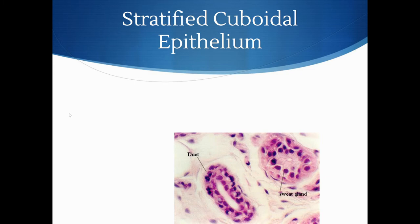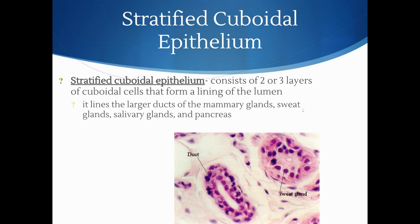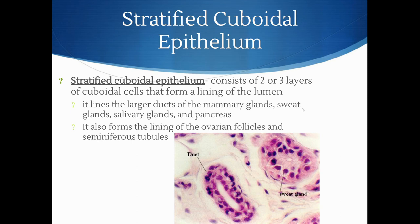Stratified cuboidal epithelium consists of two or three layers of cube-shaped cells that form the lining of the lumen — the opening in the middle. It lines the larger ducts of the mammary glands, sweat glands, salivary glands, and pancreas — anywhere that we're going to have some sort of secretion. It also forms the lining of the ovarian follicles and the seminiferous tubules.